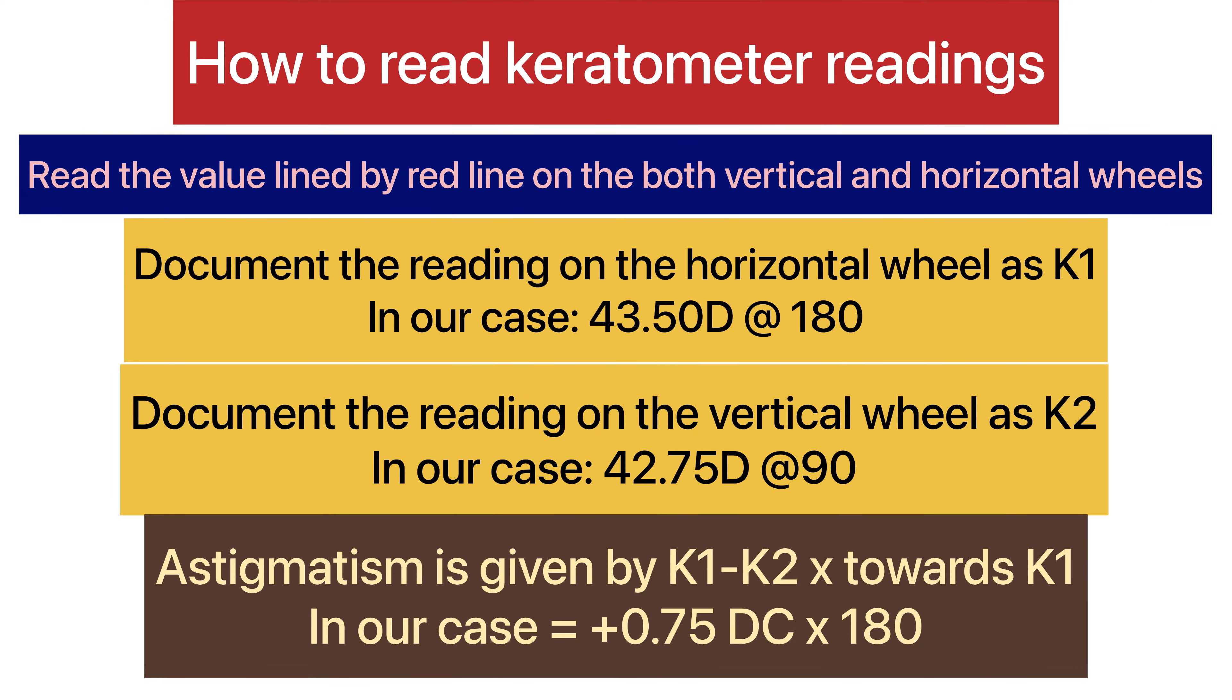Astigmatism is given by K1 minus K2 axis toward K1. In our case, it is plus 0.75 diopter cylinder axis 180 degrees.